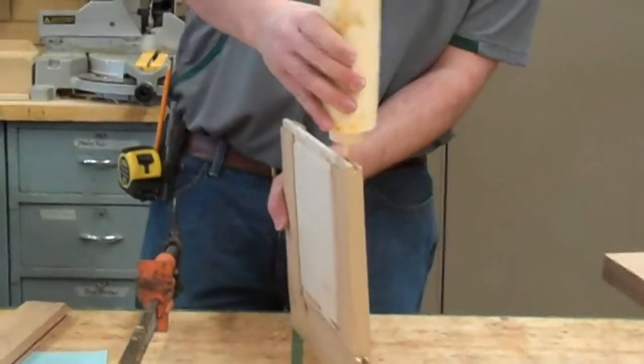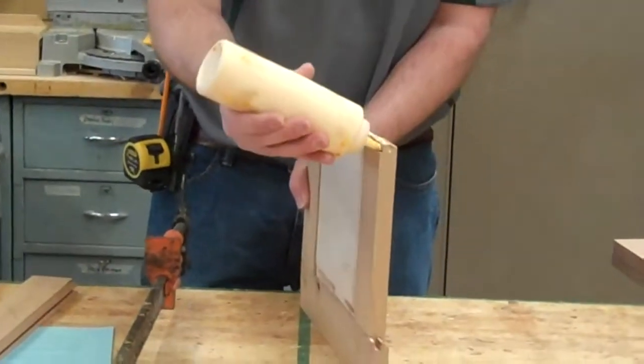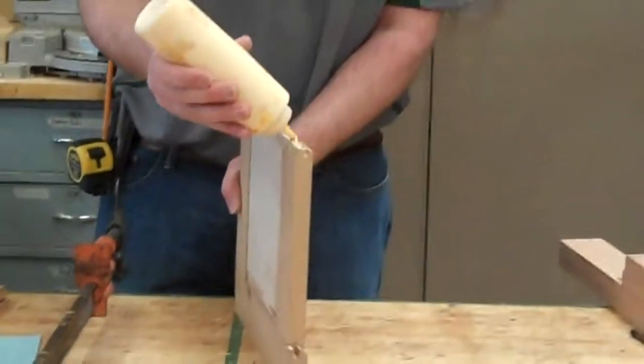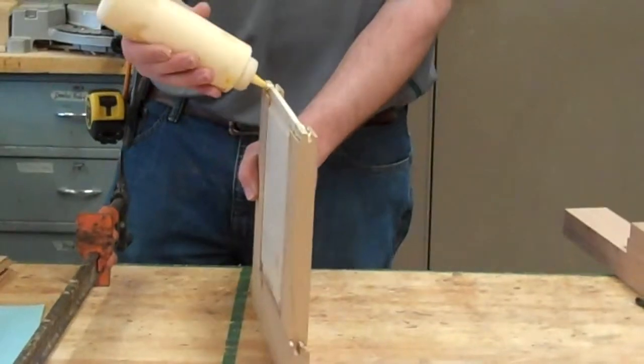Put the glue in. Now, this way you don't have to rearrange any of your rails, you don't have to rearrange your panel. The grain direction should be the correct way. A little bit of glue here. Pretty quick.